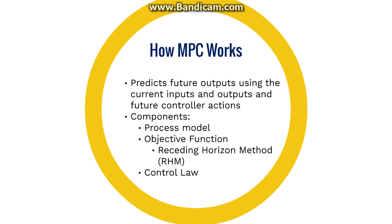So, how does model predictive control work? In its simplest form, MPC predicts future outputs using the current inputs and outputs and future controller actions. Basically, it uses what is happening now to predict what will happen in the future. Every MPC uses three elements: a process model, an objective function that uses the receding horizon method, and ultimately results in a control law.